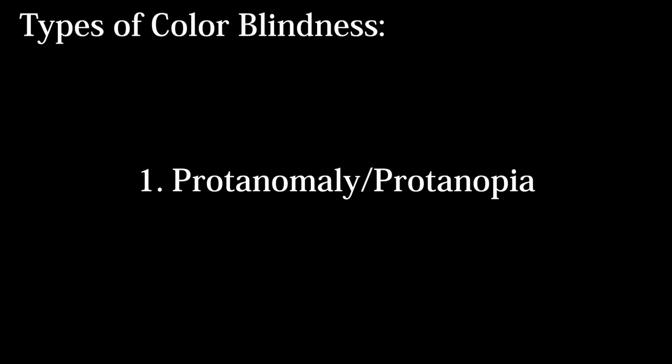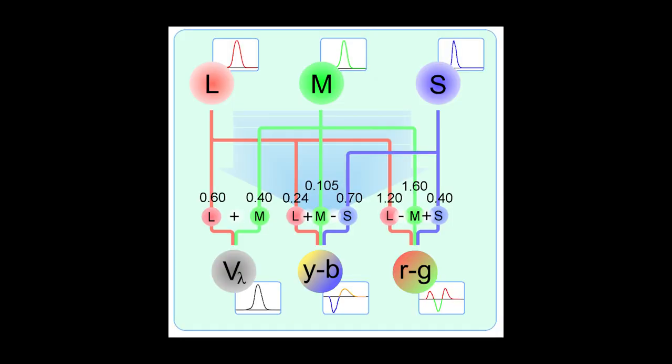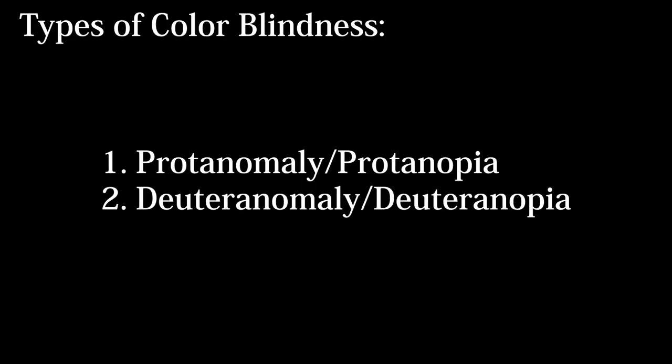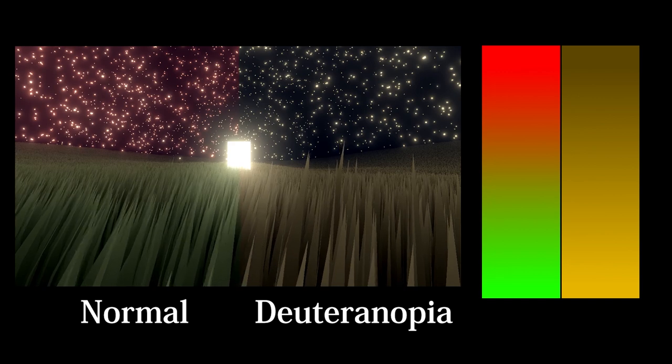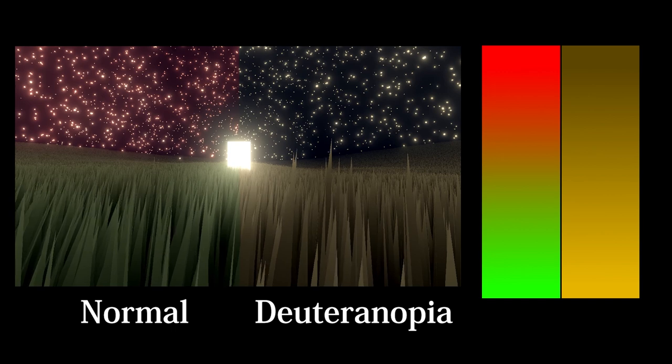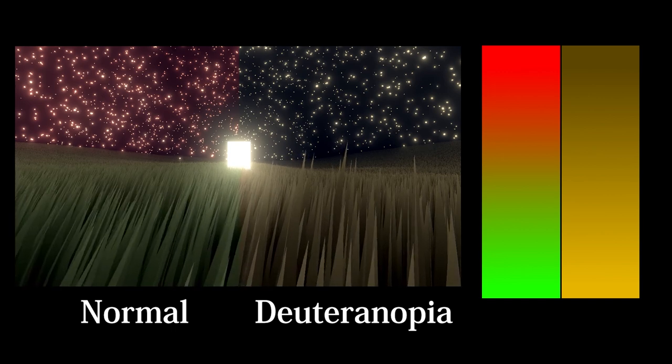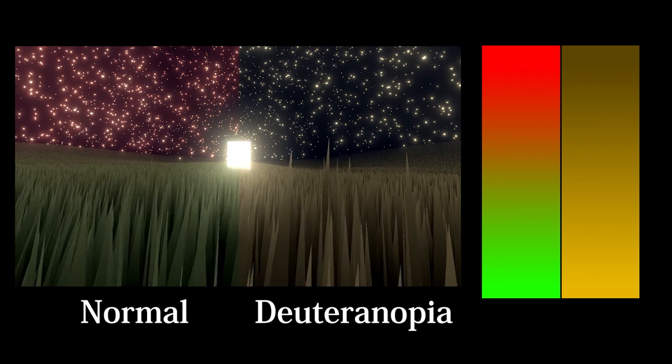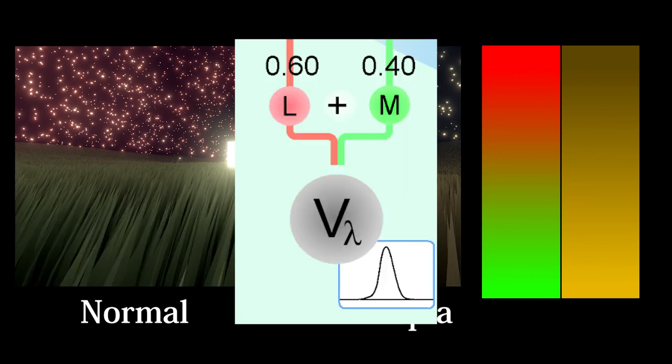The second type of colorblindness, deuteranomaly, is the malfunction of the M-cone. If the M-cone is missing, it's called deuteranopia. This kind of colorblindness is the most common, present in about 7% of the population. Deuteranopia is pretty much the exact same as protanopia but without the dimming effect since those with deuteranopia still have their L-cones.